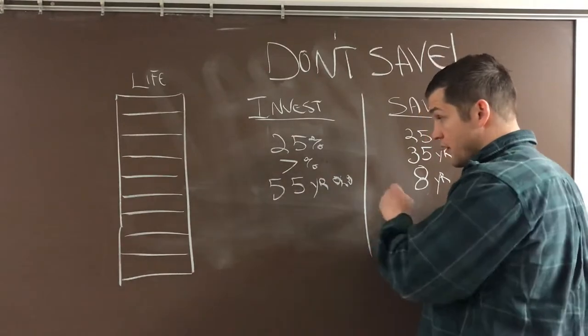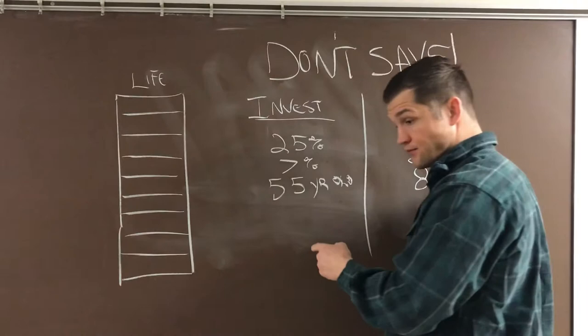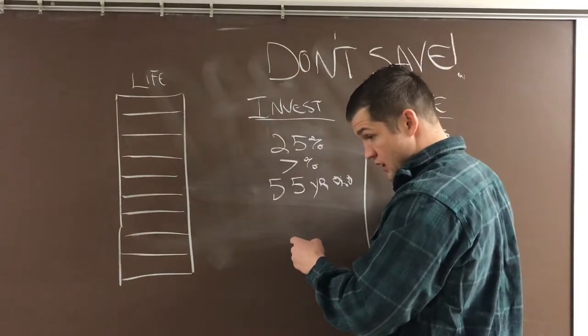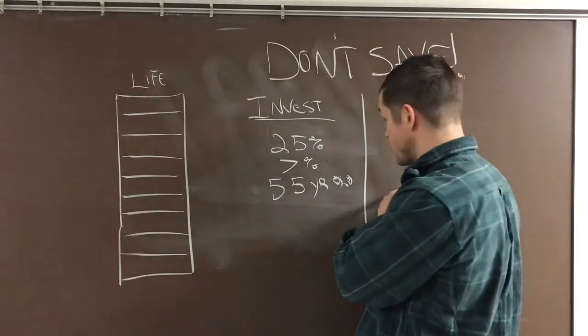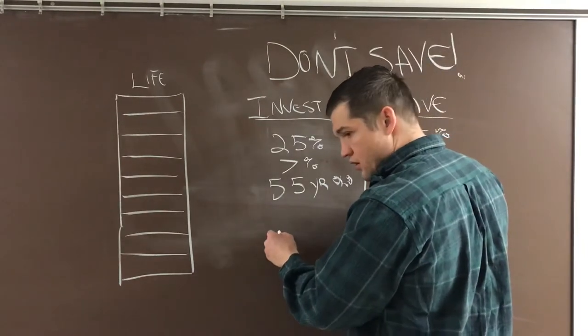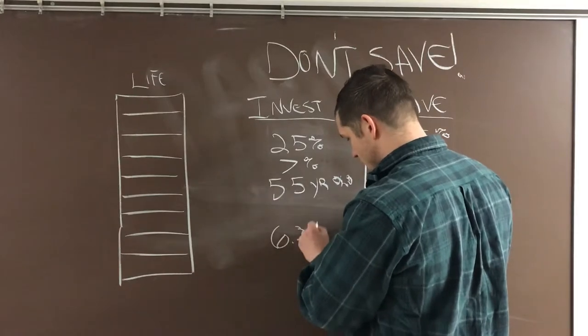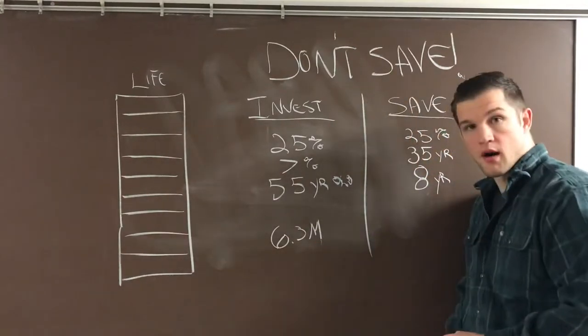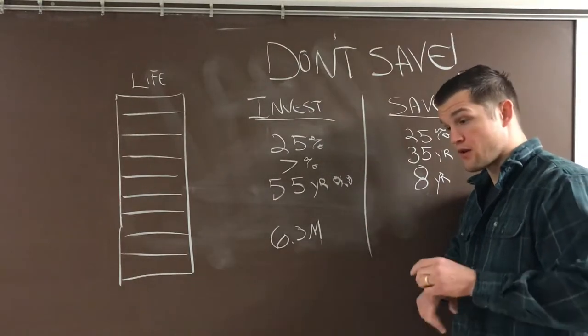I think now on the flip side, let's say that you earn the average salary coming out of Penn State and you actually keep working until you're 65. You're going to have $6.3 million when you're 65. And if you choose to invest at 7% return.